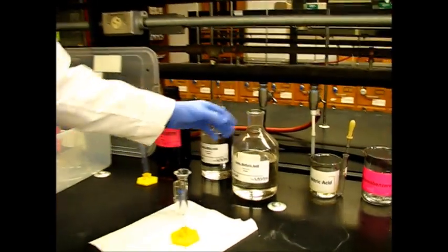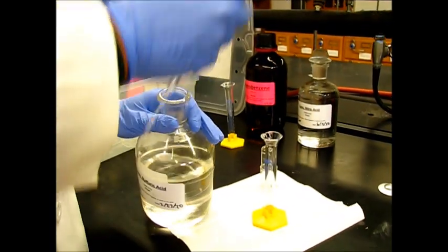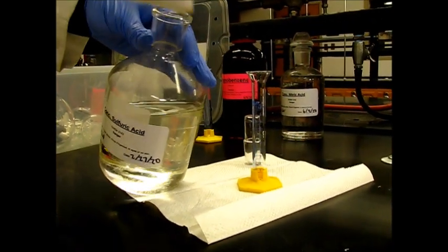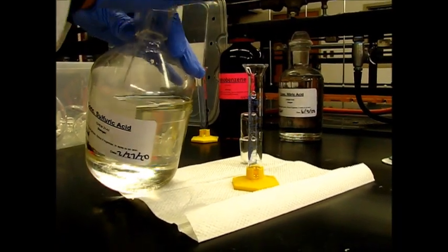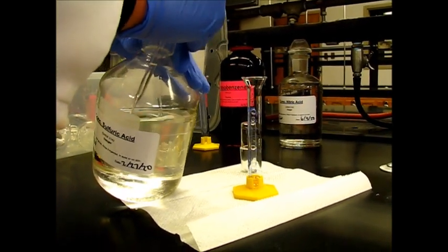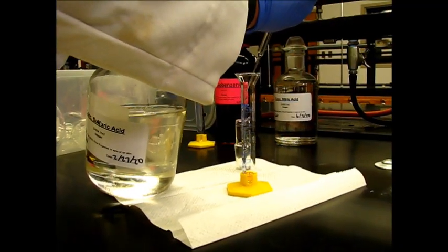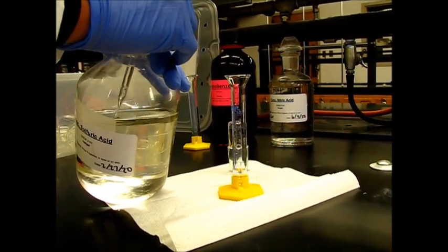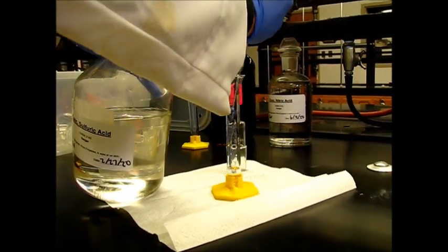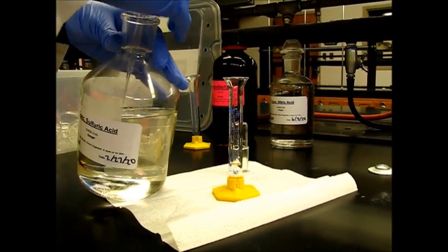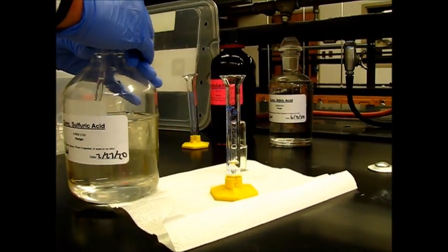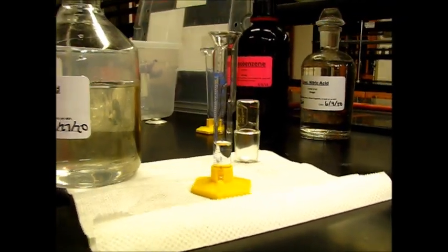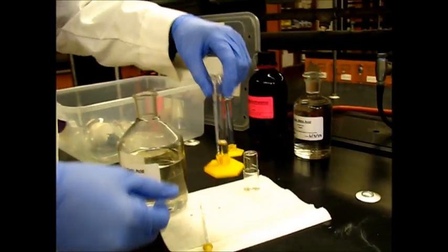First, we're going to measure out four milliliters of concentrated sulfuric acid. Almost there, just half a mil. That's it. So we're going to go ahead and add this into the round bottom flask.